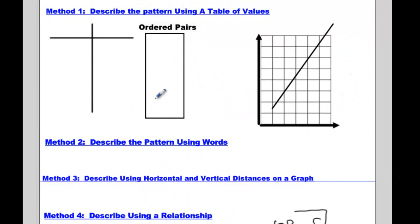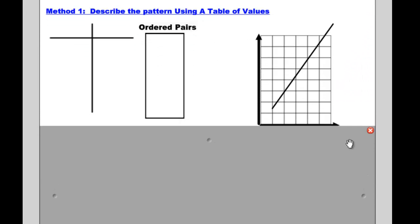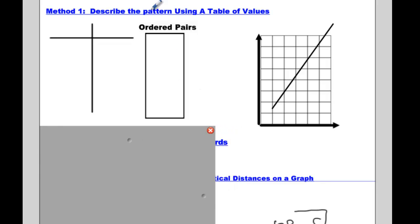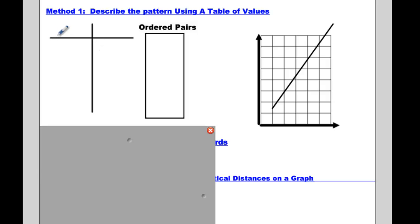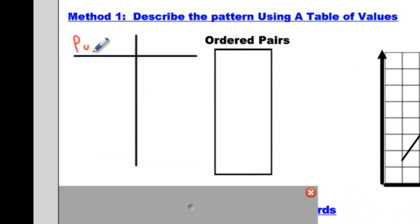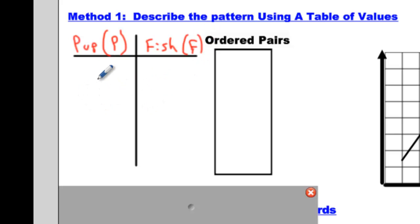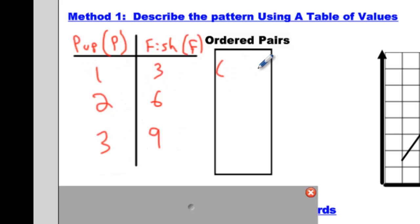So now we're going to look at 4 methods to describe this, going through them one at a time. We have ourselves a pattern and we are going to express the pattern — that's the name of the lesson: expressing patterns. The first way we can express it is with a table of values. We can write pup over here and fish. Let's write a variable for pup — how about p? And instead of fish, let's write f. Now we've got pups and fish: one pup for three fish, two gets you six, and three gets you nine fish.